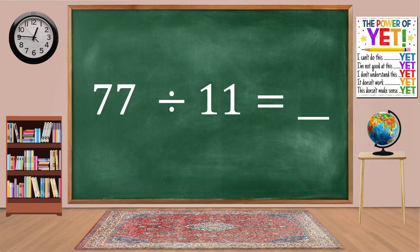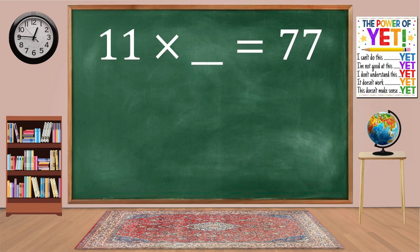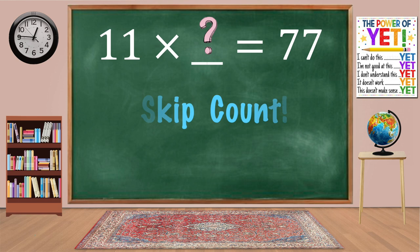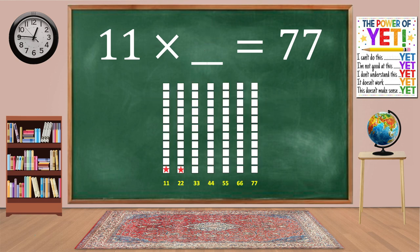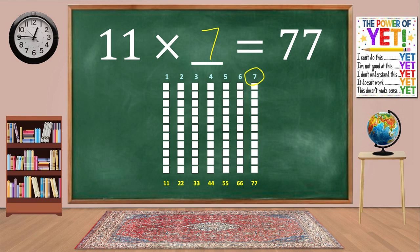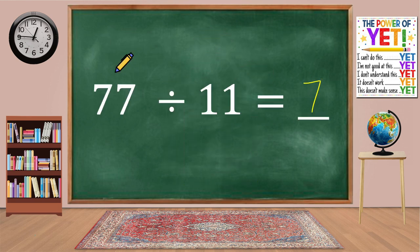77 divided by 11 equals blank. Our related fact is 11 times what equals 77. Skip count: 11, 22, 33, 44, 55, 66, 77. We have seven columns. 11 times 7 equals 77. 77 divided by 11 equals 7.